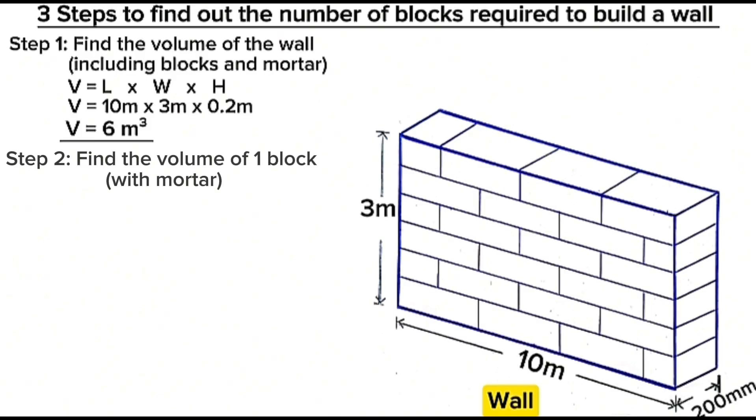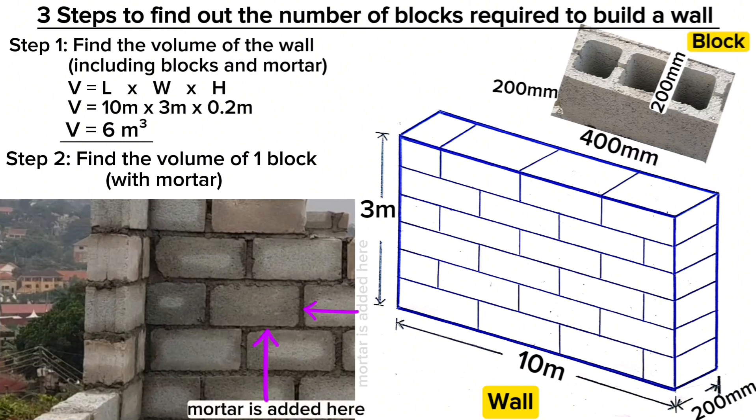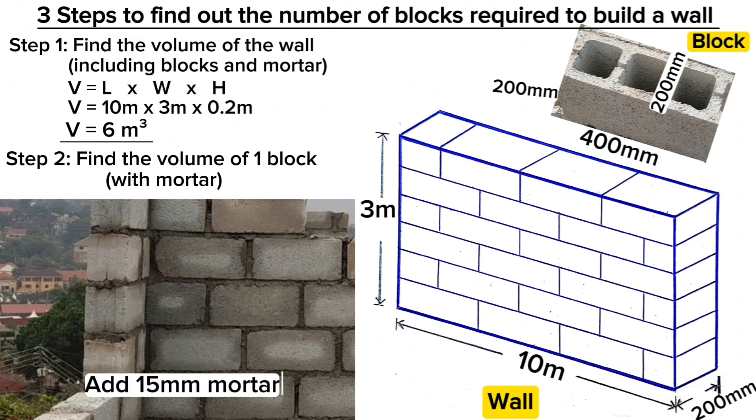Step two: considering a block of 400 millimeters along its length, 200 millimeters along the width or wall thickness, and 200 millimeters height. Practically, when a block is in a wall, mortar is added at the bottom and on the sides, meaning the measurements that increase are the length and the height. The width doesn't increase because there is no mortar added on certain surfaces.